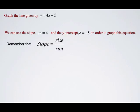Remember that slope is rise over run, so we have 4, which is really 4 over 1. So our rise is 4, and our run is 1.